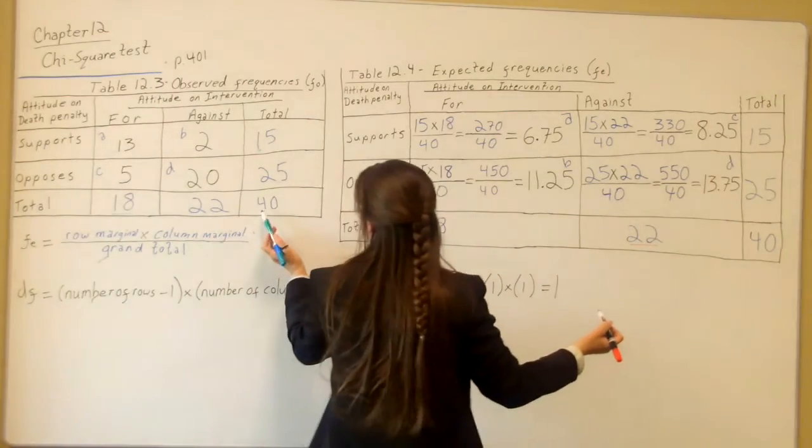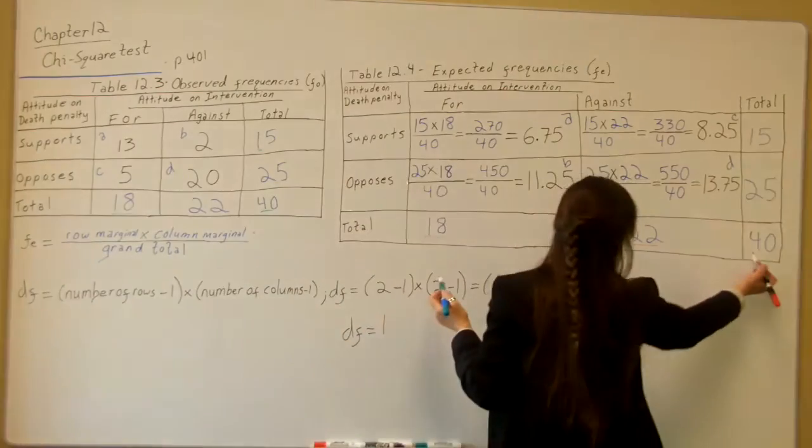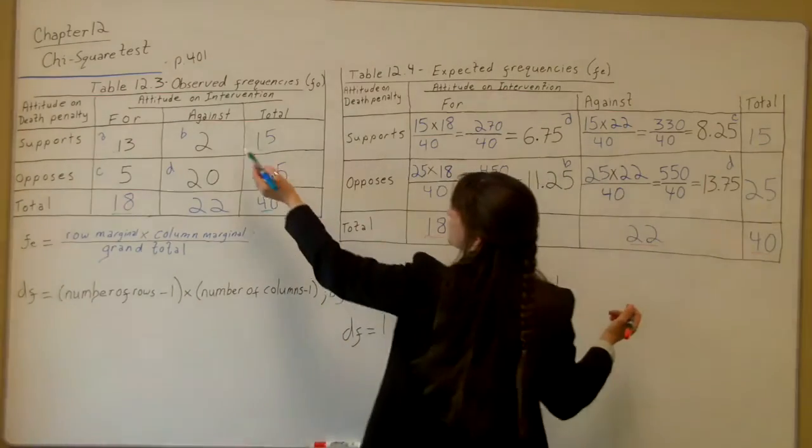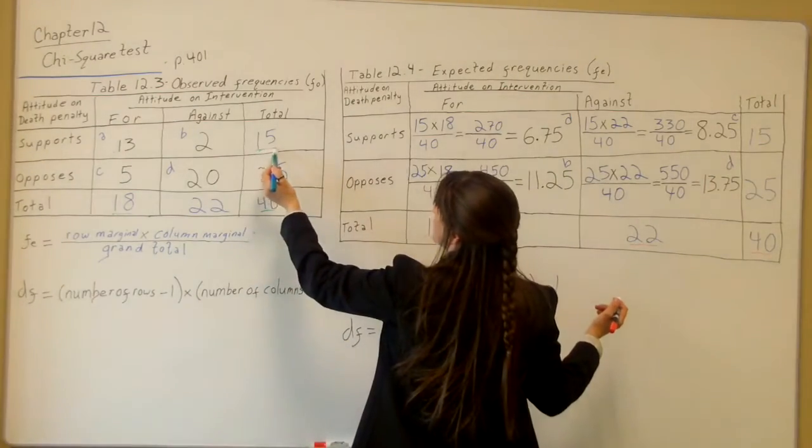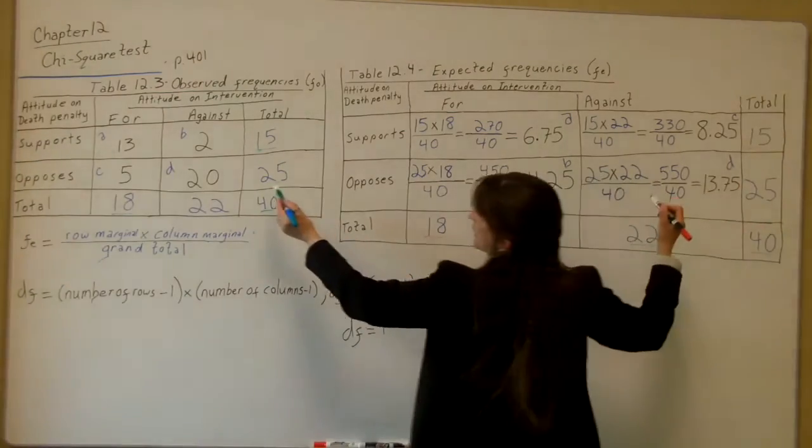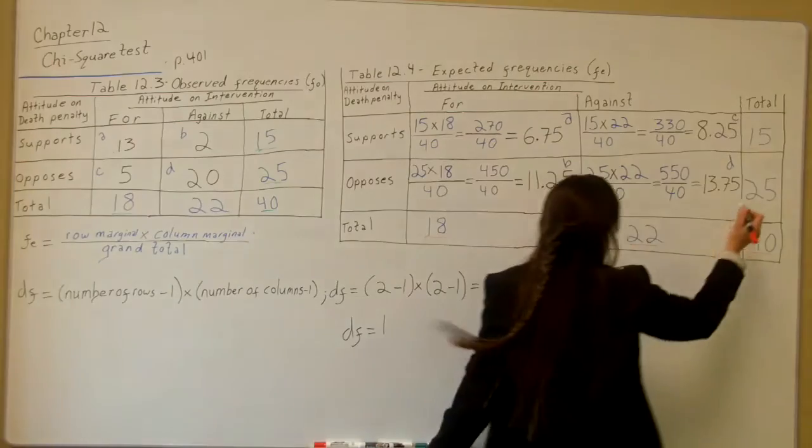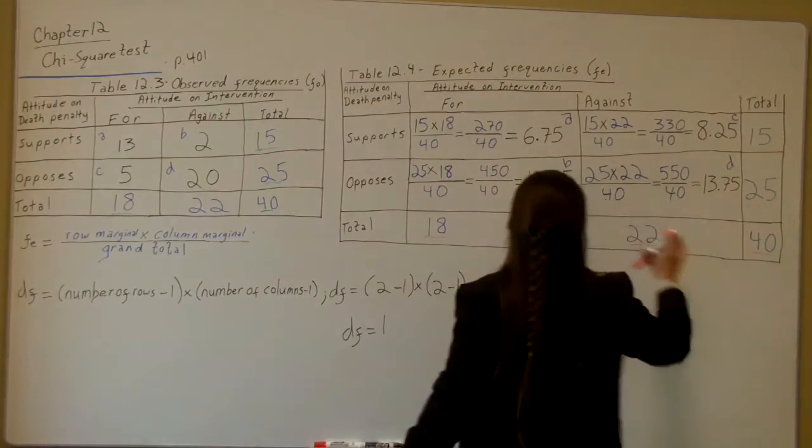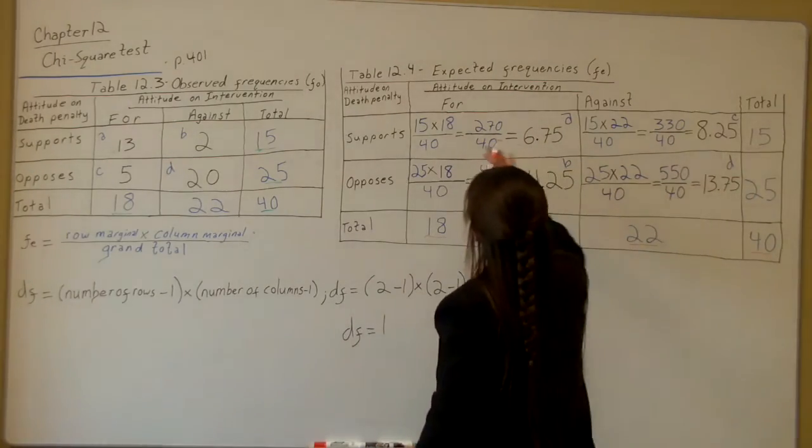You'll put 22 in. You'll put your total in, which is 40. And you'll also put your row totals, 15 for your supports and 25 for the opposes. You'll put that in your table, and then we're going to figure out the center.